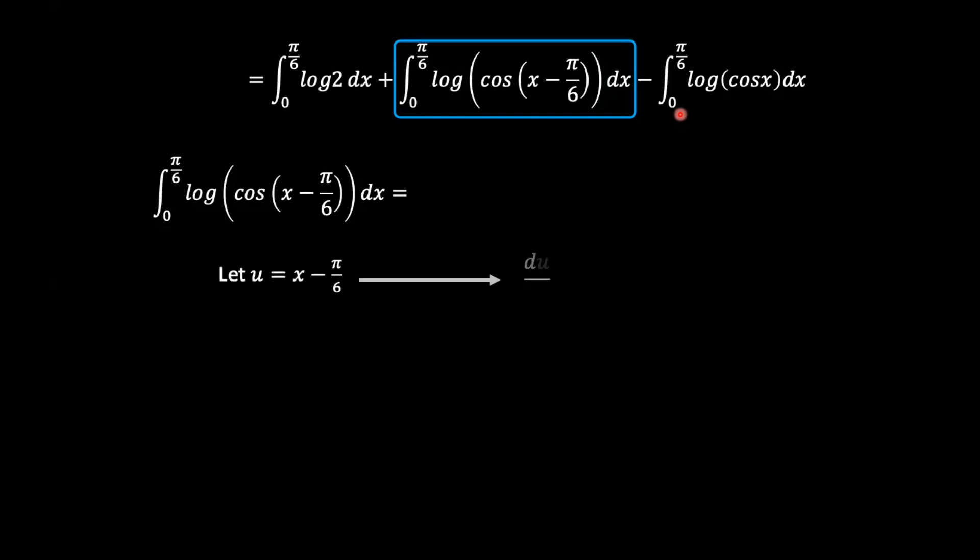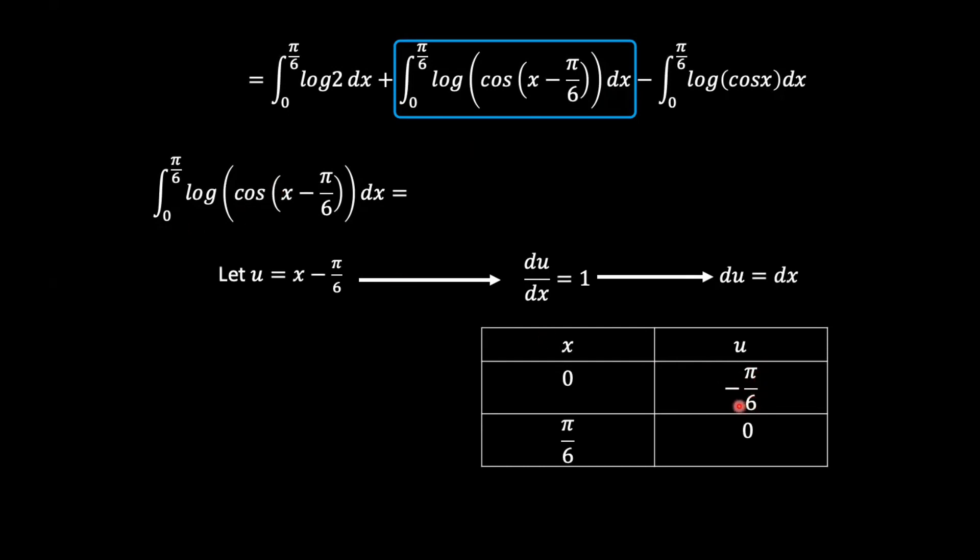So u is equal to x minus pi over 6 such that du dx is 1 and so du is equal to dx. And then when you look at the limits, when x is 0, u becomes negative pi over 6, and when x is equal to pi over 6, u is 0.